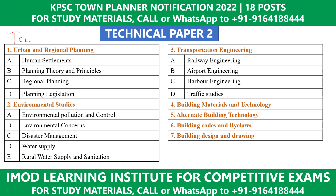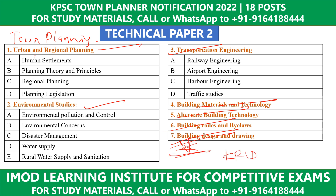Coming to the Town Planning Department notification, the technical syllabus for BE Civil candidates includes: Environmental Studies and Transportation Engineering, Urban and Regional Planning, Building Materials and Technology, Alternate Building Technology, Building Codes and Bylaws, Building Design and Drawing. These subjects need to be prepared.